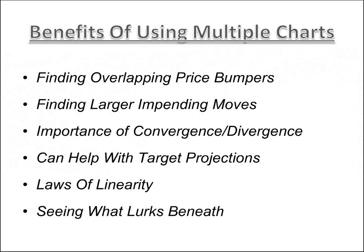Benefits of using multiple charts: finding overlapping price bumpers. On the one minute, you may have the five-period moving average at a price of $70. On the five minute, you see the 20-period moving average at the same price. Even though they're not the same moving averages, because they're the same price, this is not a coincidence. You take it as a stronger reaction zone, just like support and resistance. We don't know whether they'll break or bounce off them.